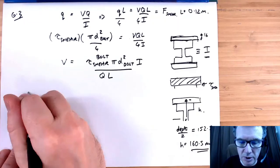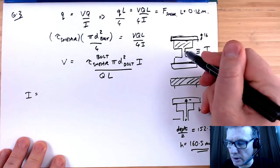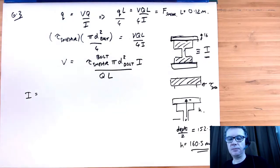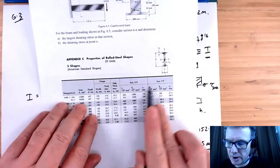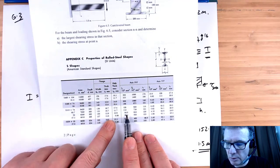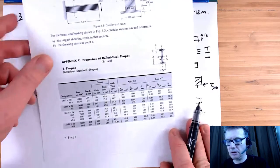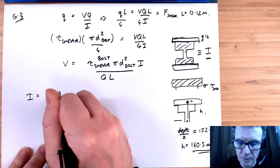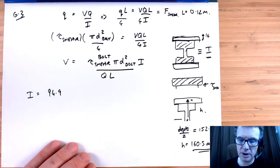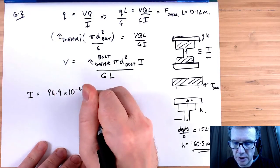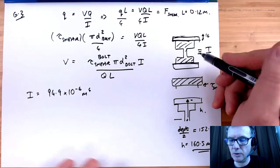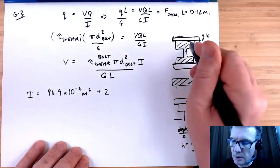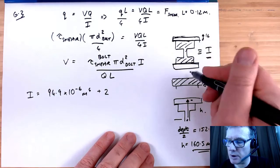Working out I: from the table, Ix for the main section is 94.9 × 10⁻⁶ m⁴. Now we add the contribution of the top and bottom plates. Since the section is symmetric, we calculate for the top plate and double the result.